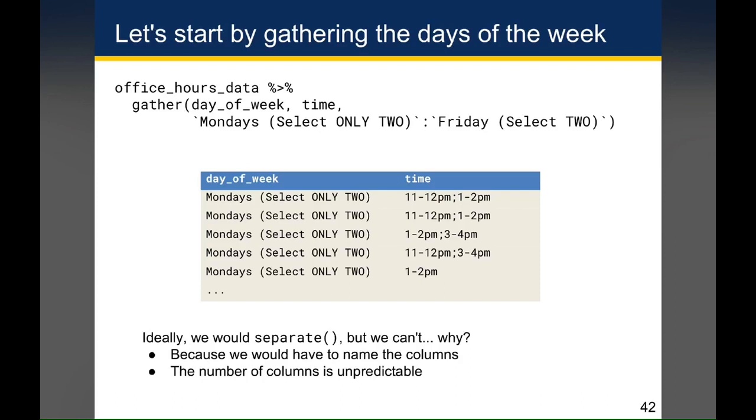Ideally, we'd want to use separate, but we can't. And the reason we can't is that we'd have to name all of the columns that we're creating. And the number of columns is unpredictable, because even just from looking at the five rows here, while some of the columns have two options selected, other values of time, students have only selected one option. And so right off the bat, we can't predict the number of columns that would be created if we used just the separate function.